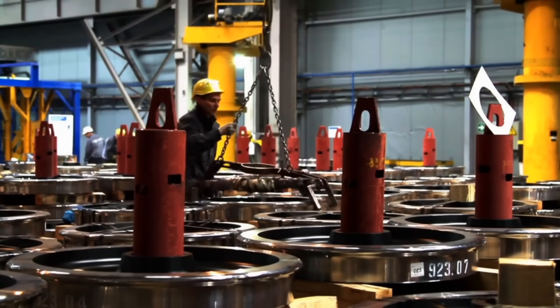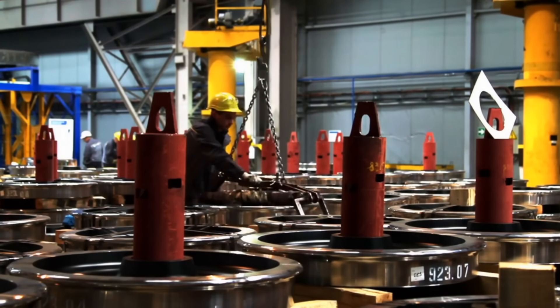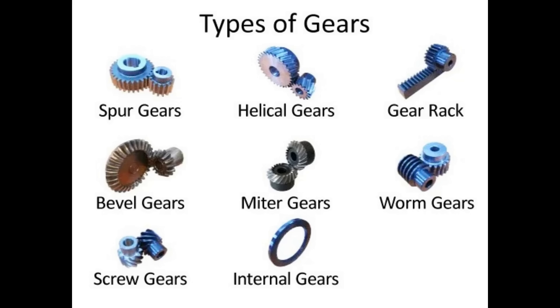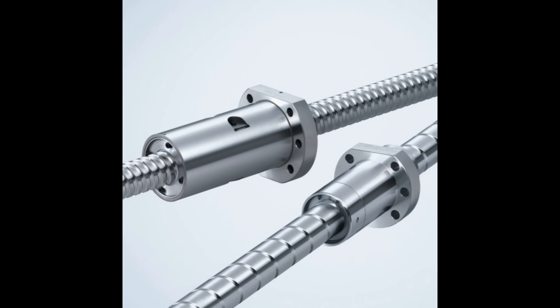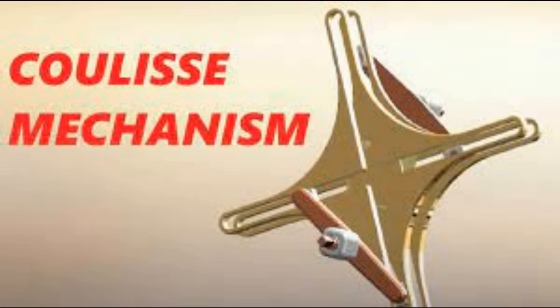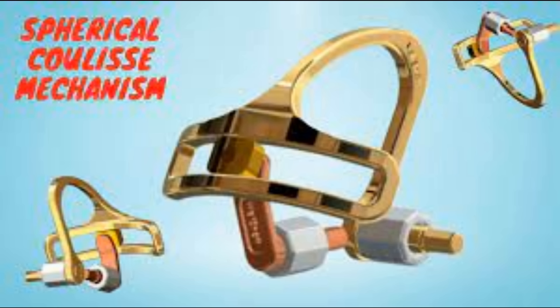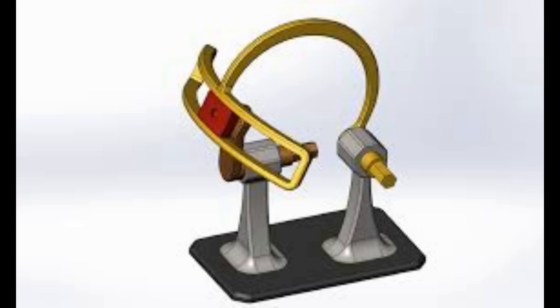Surprisingly, there are only six types of power transmission in machinery. The five common ones are shaft couplings, chain drives, gear drives, belt drives, and power screws or lead screws. The sixth, not often thought of as a drive but more as a mechanism, is the coulis mechanism — actually French for 'slide.' Any slide mechanism that can be used to drive is a coulis drive, and it comes up time and again in research papers as being more efficient than other more traditional drive forms.